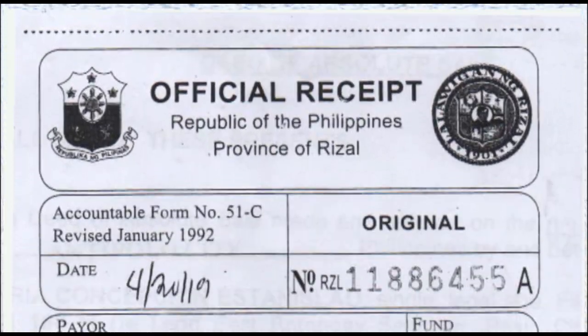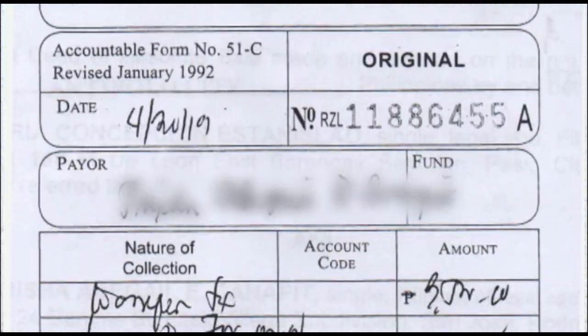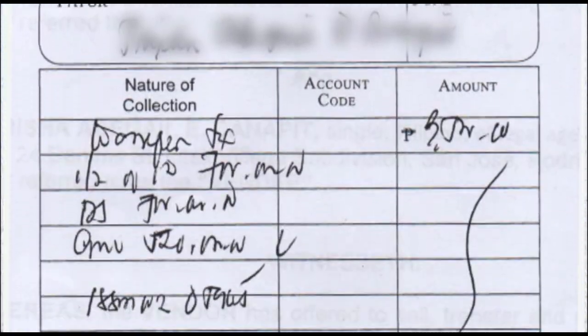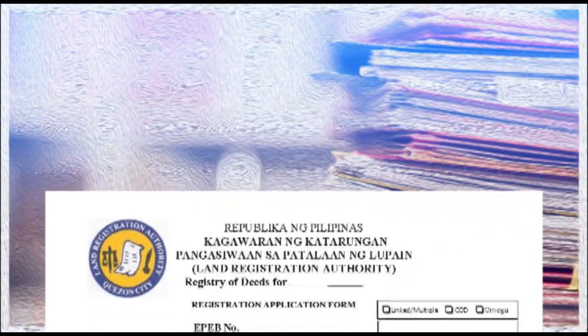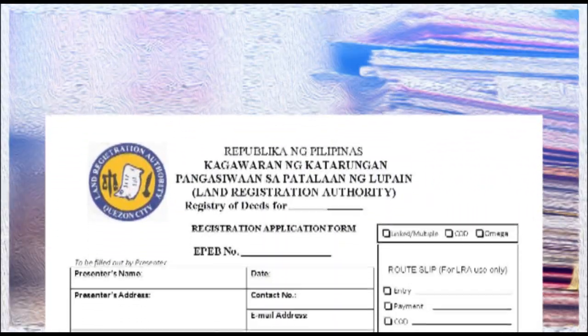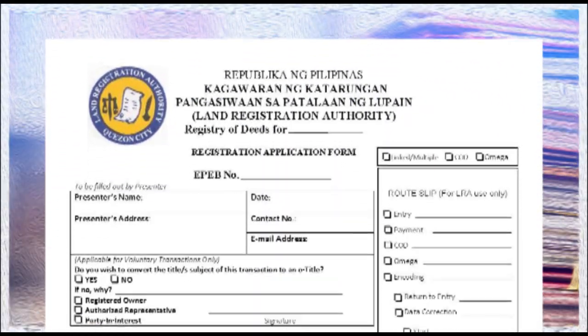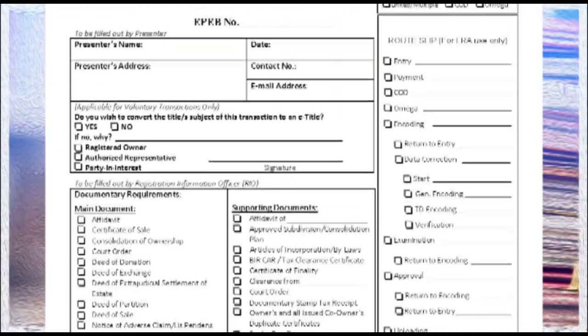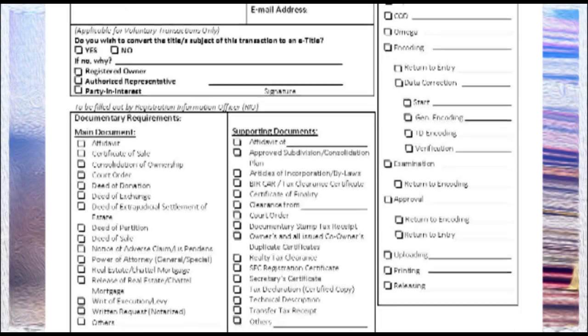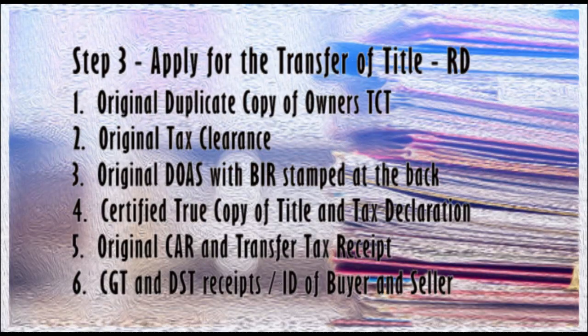Upon payment, get the receipt of transfer tax, then proceed to the Registry of Deeds. Fill out the application form and submit, then wait to be called. When called, submit the following documents.